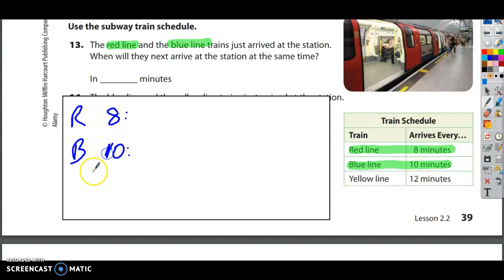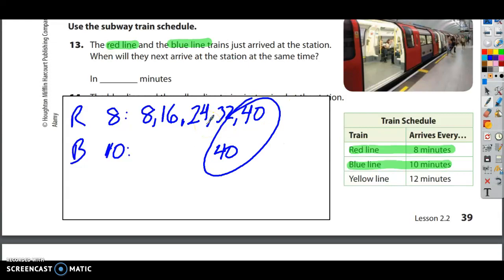The red line and the blue line comes every 10 minutes. So the red line goes 8 and then it would come back again in 16. It would come back for the third time after 24 minutes, then 32, and then 40. And I kept in my head, I was going to do my multiples of 10, and I know it's going to be 40. It would be 10, 20, 30, 40. So it's going to come back again in 40 minutes, and the red line is going to come back again in 40 minutes. That's the next time they'll be at the station together. So we did an LCM of 8 and 10, we got 40. Let's go ahead and do the next one.